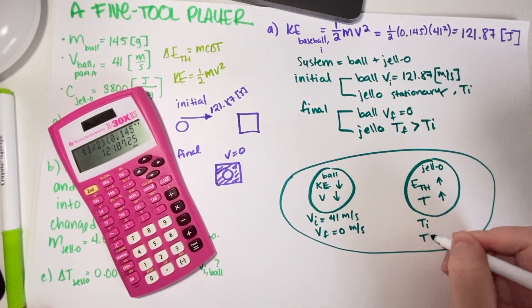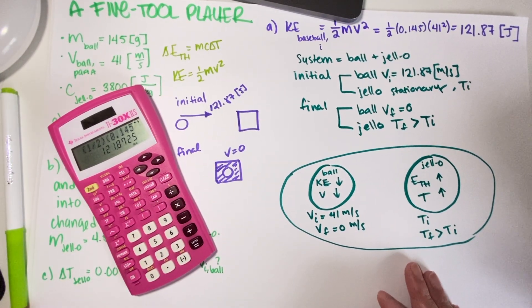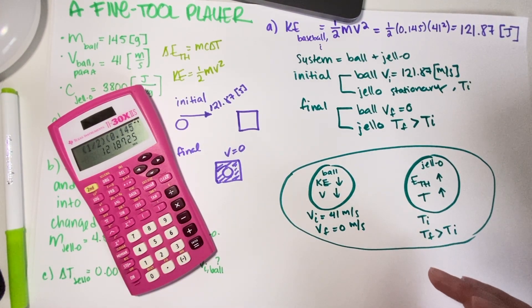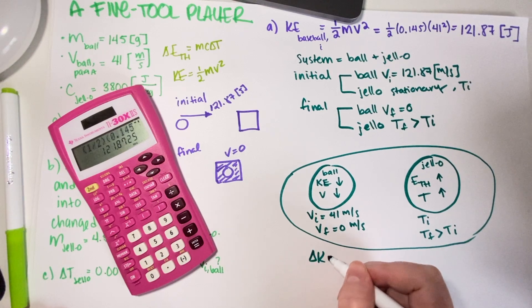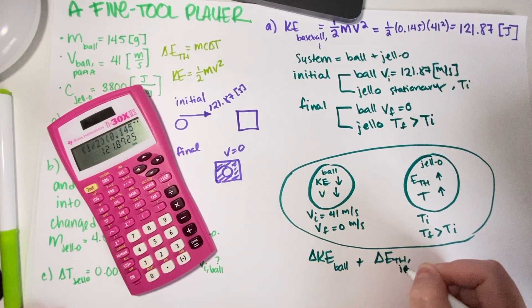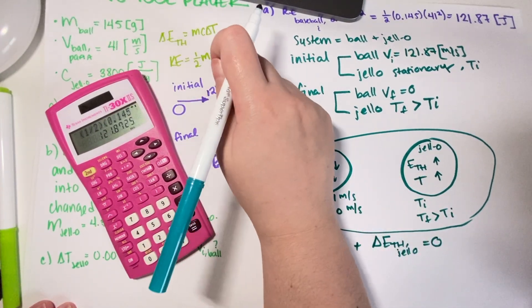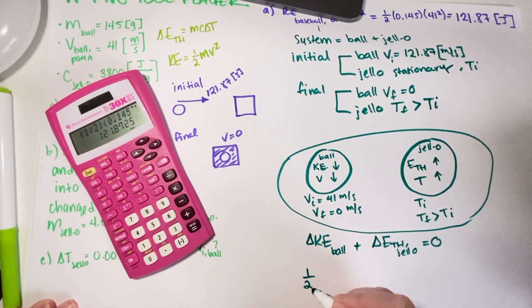So now what we do is basically put this in an equation to get full credit. Change in kinetic energy from the ball plus change in E_thermal for the jello equals zero.